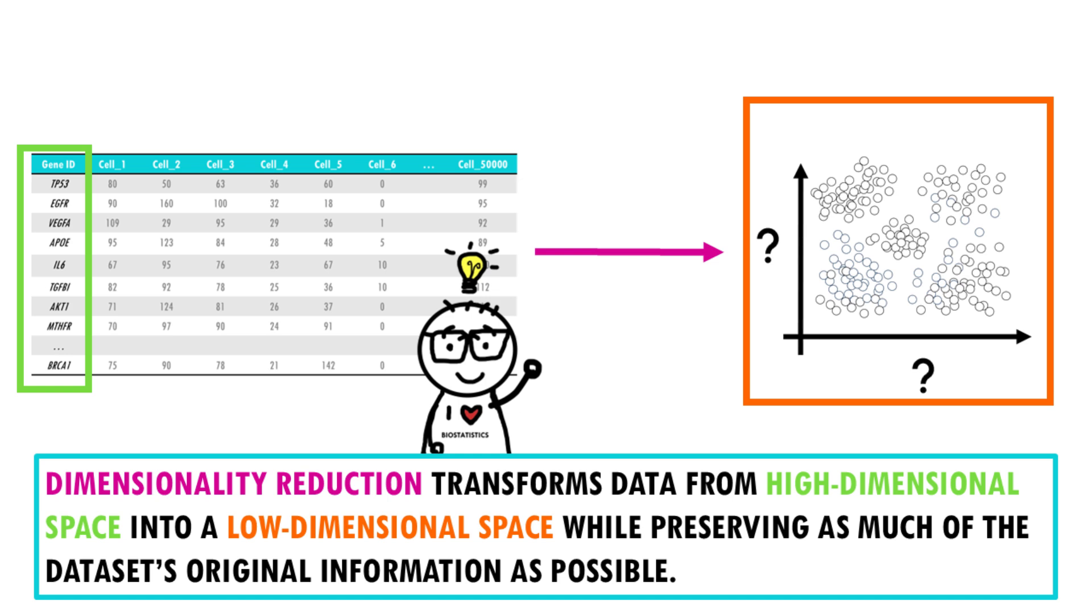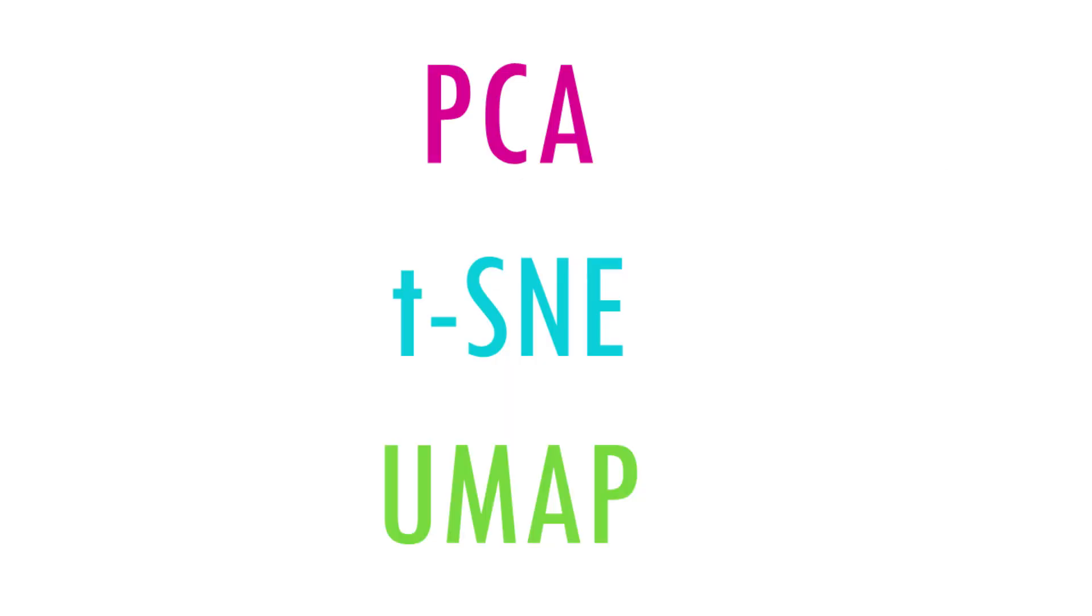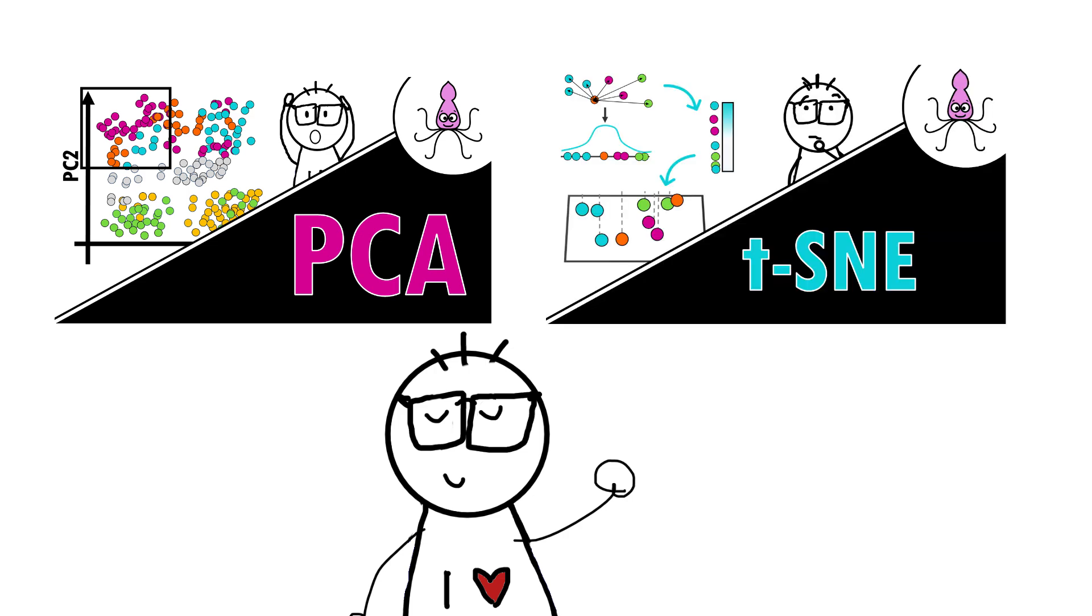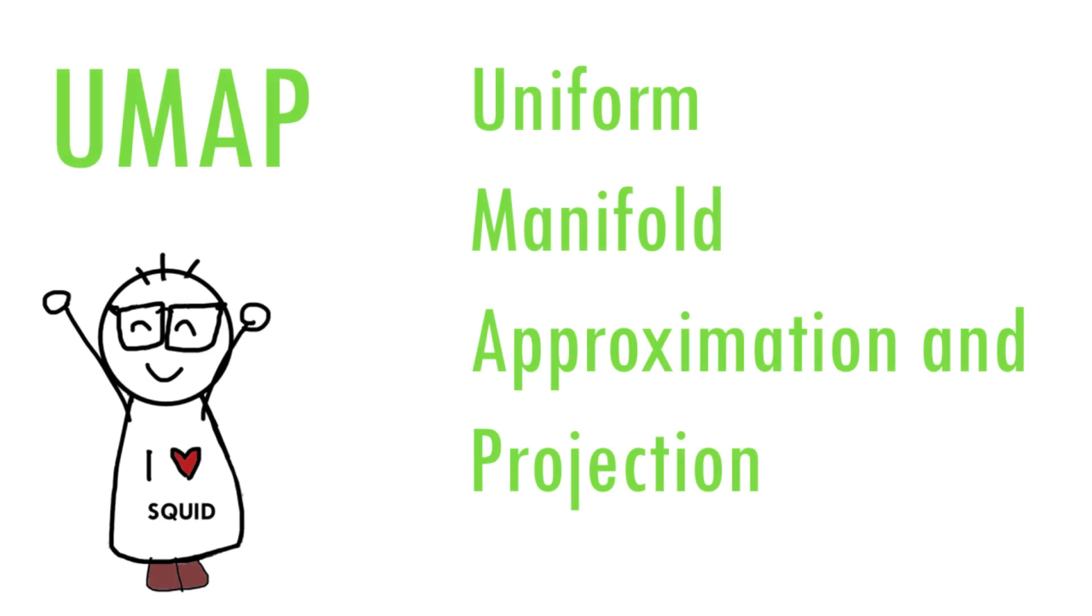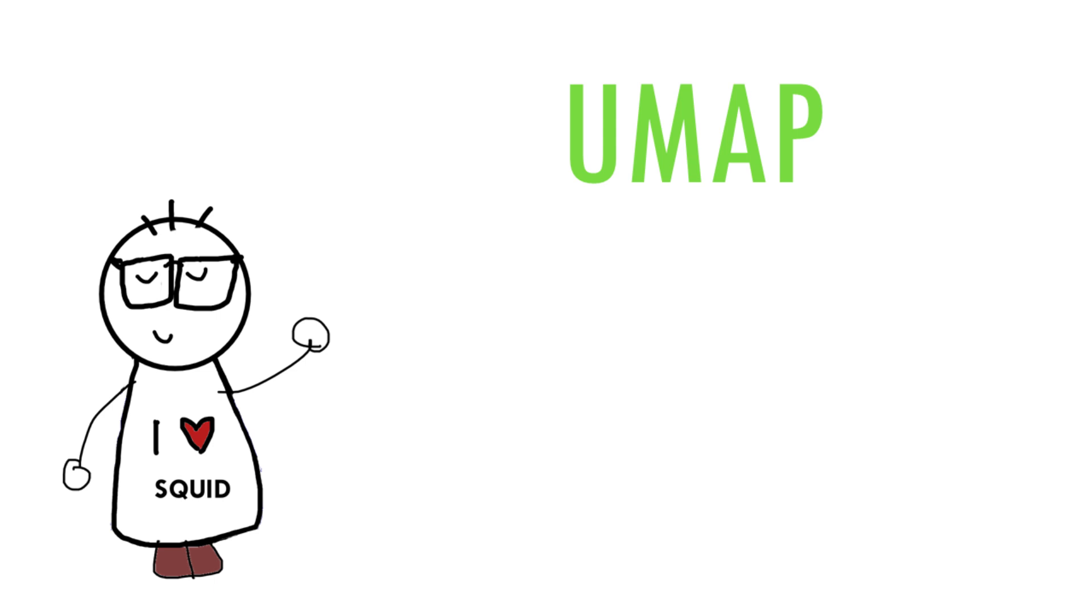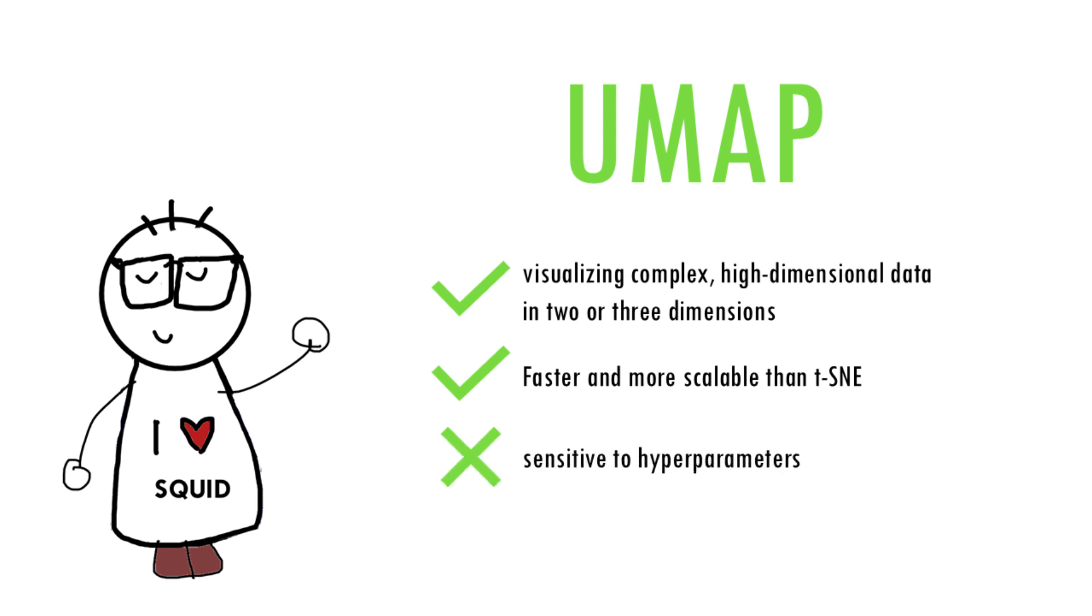We already explained two dimensionality reduction algorithms, PCA and TSNE, and today we'll cover UMAP, Uniform Manifold Approximation and Projection. In a nutshell, UMAP is another dimensionality reduction technique similar to TSNE, but it's often faster and can better preserve global structure while still focusing on local relationships.